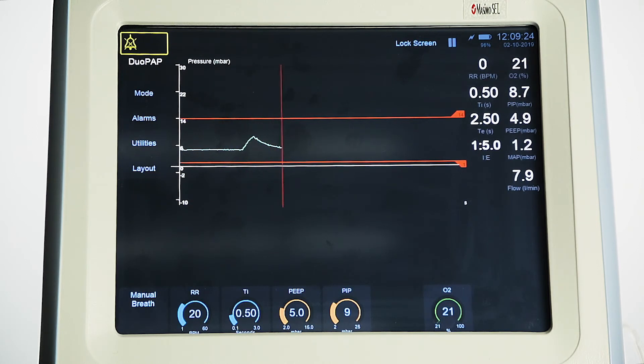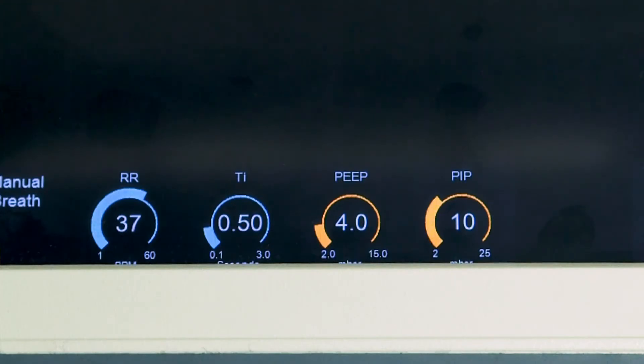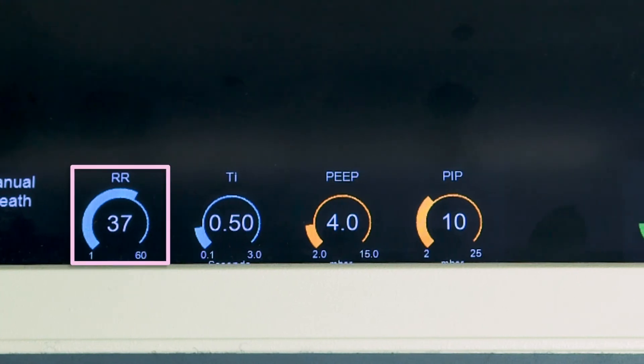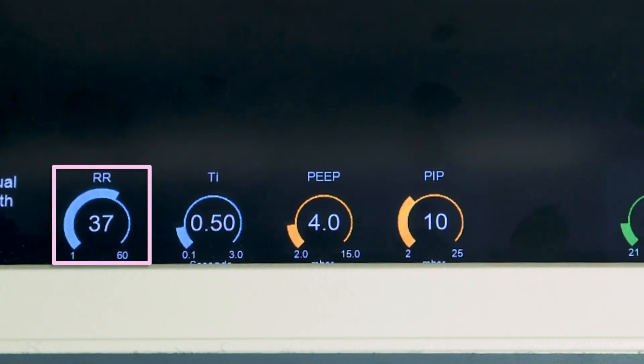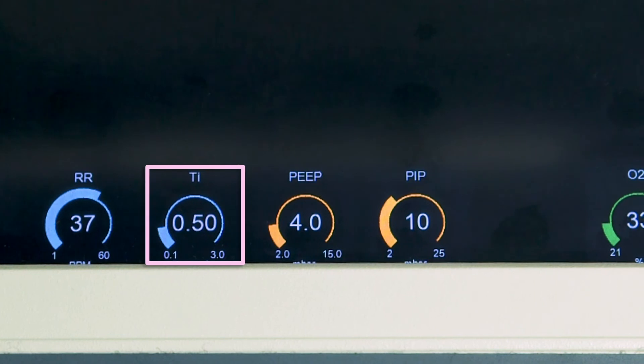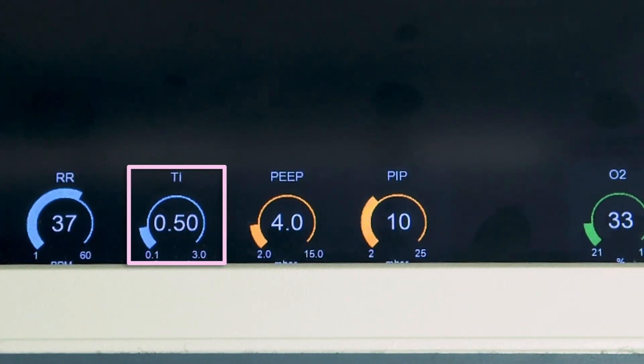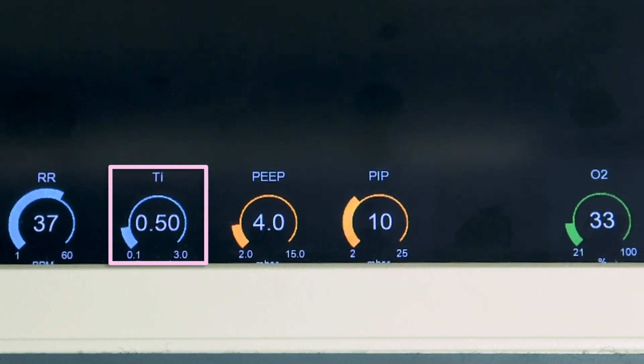It provides at a fixed rate ventilation at a user-defined positive pressure. On the screen, the user will set RR, which is the ventilation rate, and TI, which is for fixed rate ventilation and manual breaths.